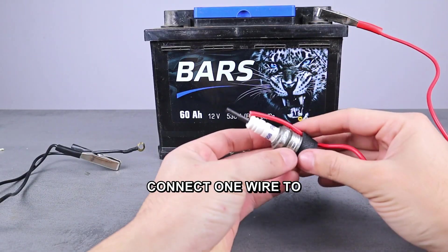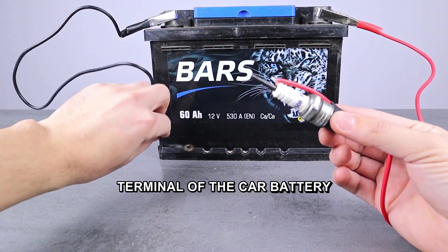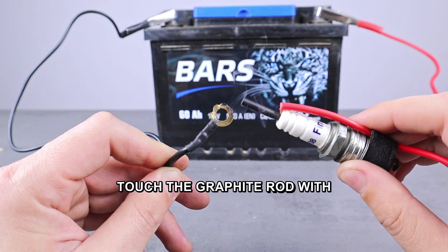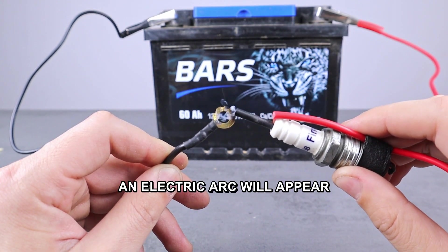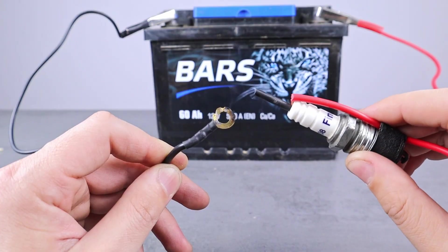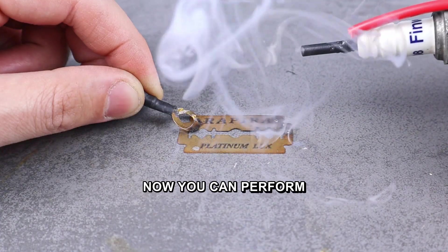Connect one wire to the positive terminal of the car battery. Touch the graphite rod with the second wire and an electric arc will appear. Now you can perform spot welding.